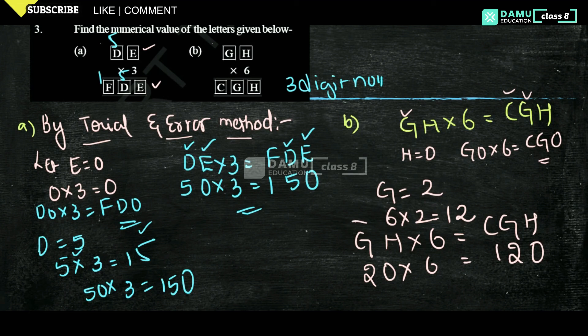So G equals 2, Z equals 2, H equals 0. Like that we can calculate. So GC values are: G is 2, H is 0, C is 1. That is 20 into 6 equals 120.